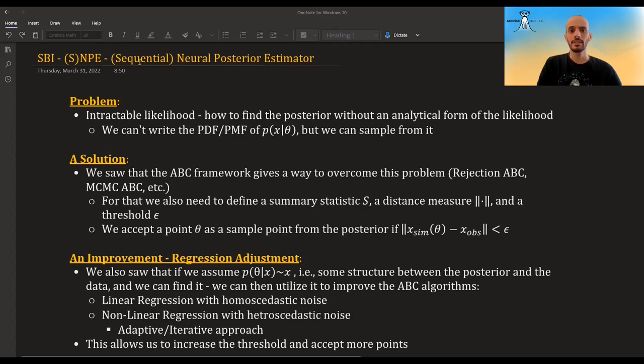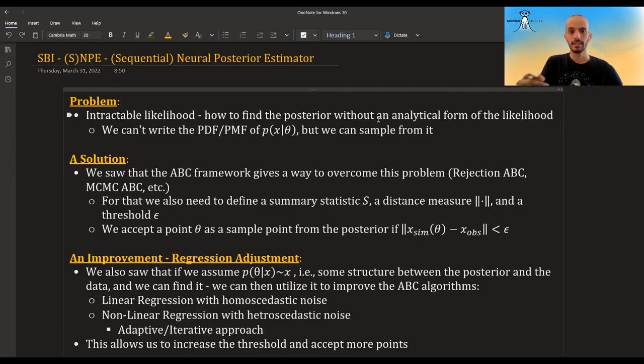So just a reminder of what the problem is. The problem is that we have intractable likelihoods. We want to find a posterior, but we can't write the likelihood in an analytical form. We can only sample from it.